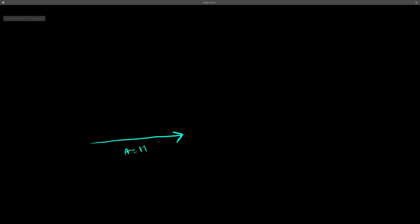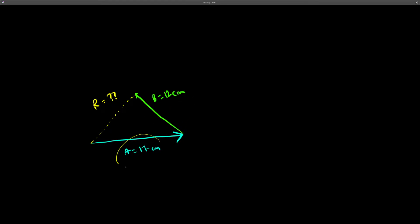Now say we have two vectors: vector A equal to 17 centimeters and vector B equal to 12 centimeters. How do we calculate the resultant R? Whenever we have two vectors and it's not a right triangle, we need to calculate the resultant using the cosine rule. The cosine rule allows us to calculate the resultant using the angle between the vectors.